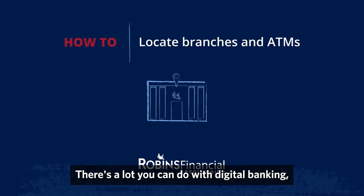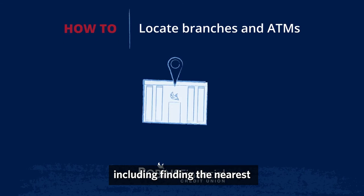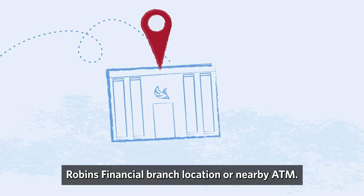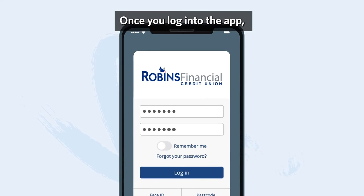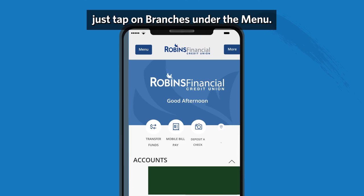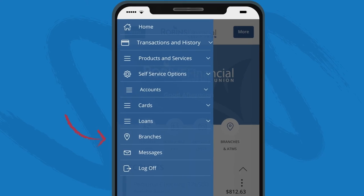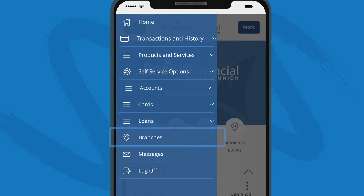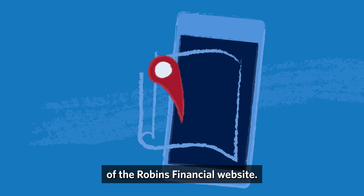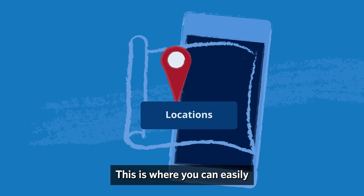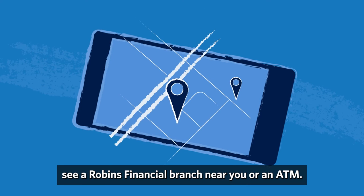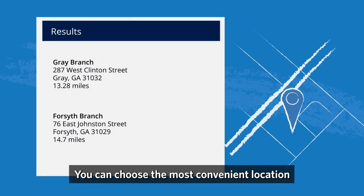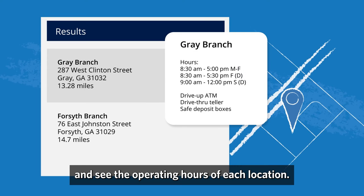There's a lot you can do with digital banking, including finding the nearest Robins Financial branch location or a nearby ATM. Once you log into the app, just tap on branches under the menu. This will open the locations page of the Robins Financial website, where you can easily see a branch near you or an ATM. You can choose the most convenient location and see the operating hours of each location.